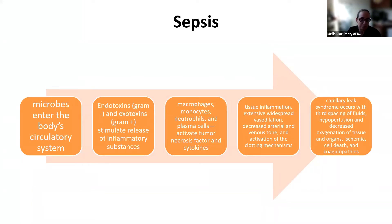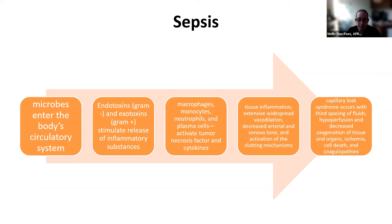So what actually occurs with the sepsis pathway? Microbes enter the body's circulatory system. The release of endotoxins from gram-negative bacteria or exotoxins from gram-positive bacteria stimulates the release of inflammatory substances within the body — including macrophages, monocytes, neutrophils, and plasma cells — which then activate tumor necrosis factor and cytokines. We see tissue inflammation, extensive widespread vasodilation, a decrease in arterial and venous tone, and activation of clotting mechanisms. This leads to capillary leak syndrome with third spacing of fluids, hypoperfusion, decreased oxygenation of tissue and organs, ischemia, cell death, and coagulopathies.